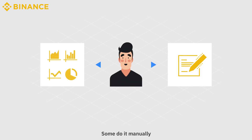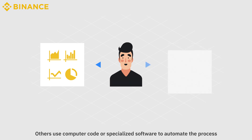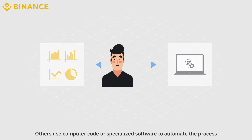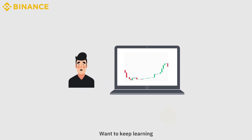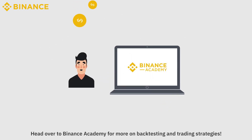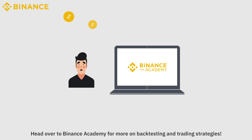There are many ways to do backtesting. Some do it manually, using notes and spreadsheets. Others use computer code or specialized software to automate the process. Want to keep learning? Head over to Binance Academy for more on backtesting and trading strategies.